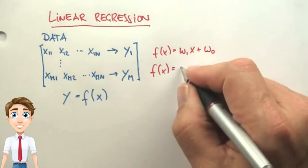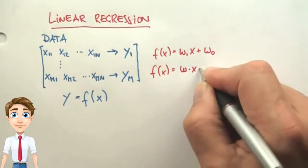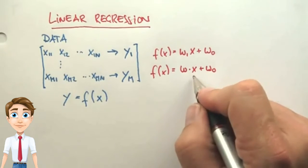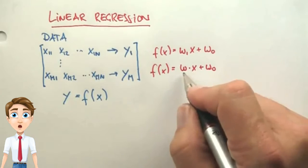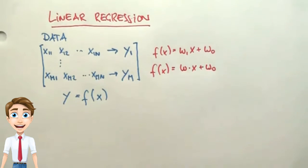Or in a high-dimensional space, we might just write w times x plus w0, where w is a vector and x is a vector, and this is the inner product of these two vectors. But for now, just consider the one-dimensional case.